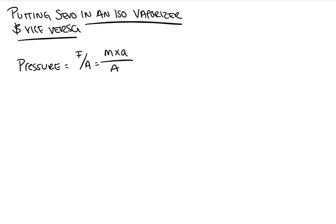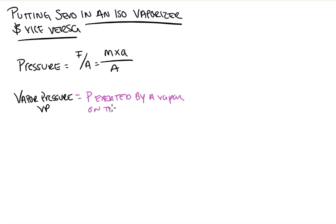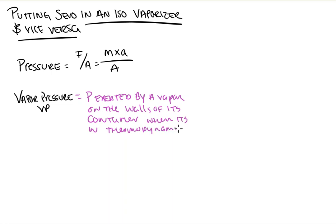Next we need to define vapor pressure, which we'll write as VP. We're going to define this in words. Vapor pressure is the pressure exerted by a vapor on the walls of its container when it's in thermodynamic equilibrium.